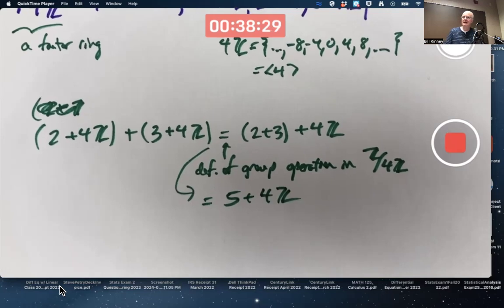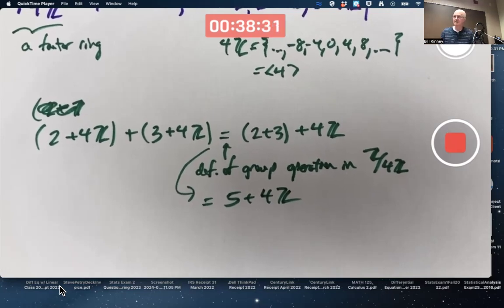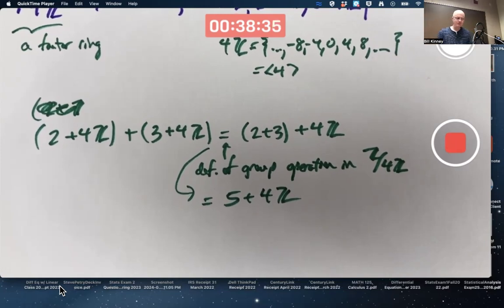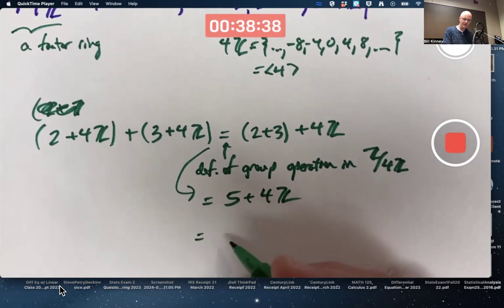The next step is using properties of cosets. There's a couple different ways it could be thought about. Here's the way the book thinks of it. Think of 5 as 1 plus 4.